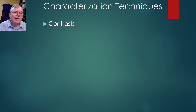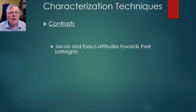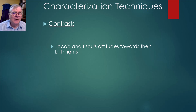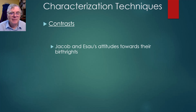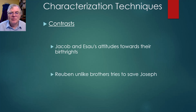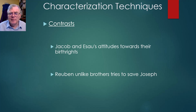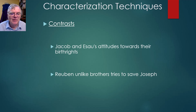Sometimes characterization is shown through the speech of other characters. God characterizes Job as a blameless and upright man who fears God and turns away from evil. Characterization can also be made by contrasting characters — Jacob and Esau had rather different attitudes towards their birthright. Esau was willing to sell it for just a bowl of porridge, whereas Jacob considered it valuable and went to extreme, even unethical, means to obtain it. Esau loved hunting while Jacob was more of a homebody. Reuben, unlike the other brothers, tried to save Joseph when they threw him in a pit.